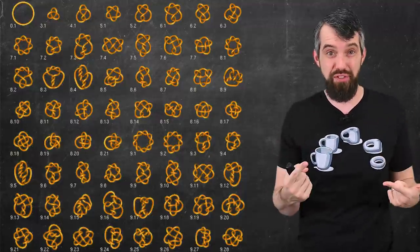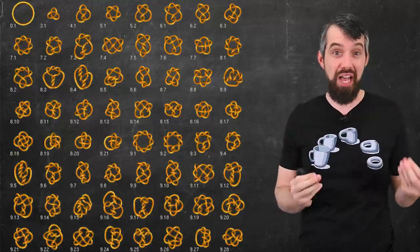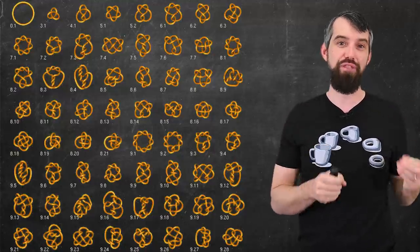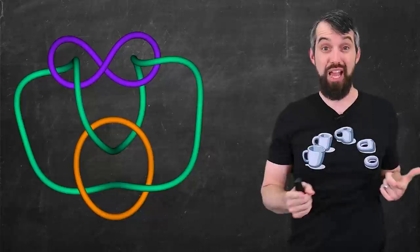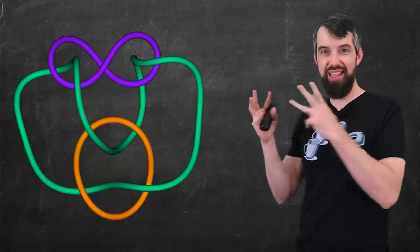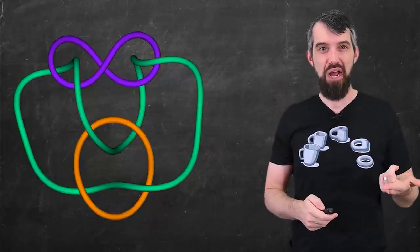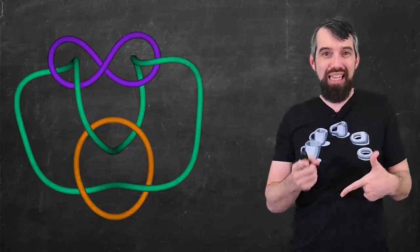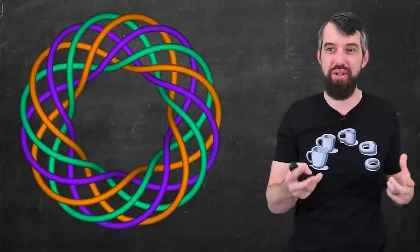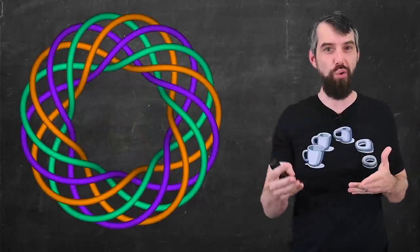And this is just scratching the surface of all the body of work that can be done and the questions that remain in the field of knot topology. For example, things that can be looked at are links, like this one, where multiple different ropes are all tied together. Or you could look at knots or links that had sort of specific requirements, like all living on the edge of a torus like this one.